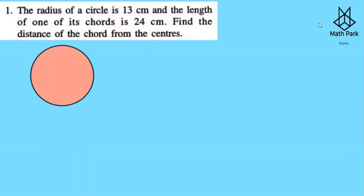Question 1: The radius of the circle is 13 centimeters and the length of one of the chords is 24 centimeters. Let chord AB have length 24. O is the center of the circle, radius 13 centimeters. Find the distance of the chord from the center. Let OP be that perpendicular distance, which we need to calculate.